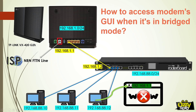For the time being, I won't be able to access the GUI of the modem because these two networks don't know each other yet. Our router doesn't know about the 1.0/24 network, and the modem doesn't know the 88.0 network. This is what we need to configure so that they can communicate.